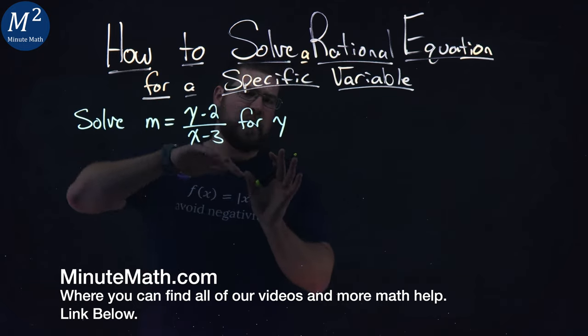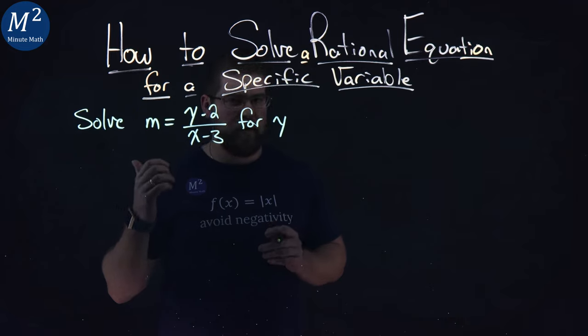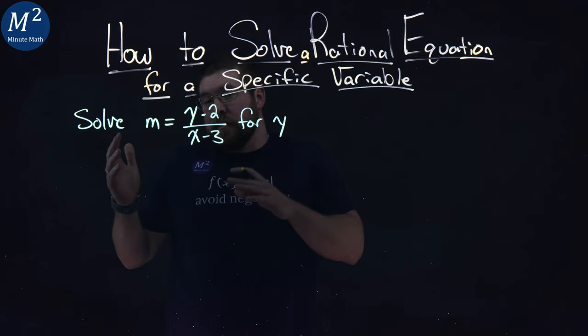Now, I want to get y by itself, and this is a little tricky because we have three variables here, but the same principles still apply.